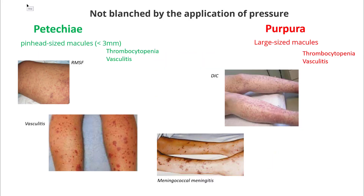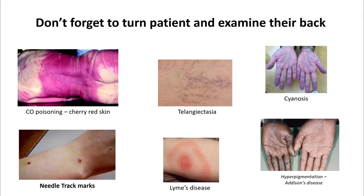Petechiae and purpura can be a bit confusing. Petechiae are pinhead-size macules less than 3 millimeters, while purpura are larger macules, and both are not blanched by application of pressure. Both can be seen in thrombocytopenia, vasculitis, and certain infectious diseases. Don't forget to turn the patient and examine their back, as you might miss certain important findings.